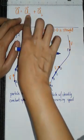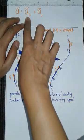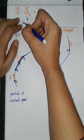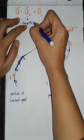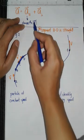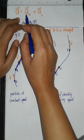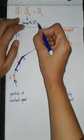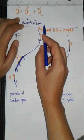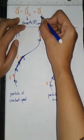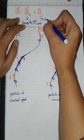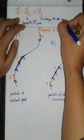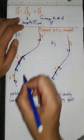So this changes the magnitude of the velocity of a particle. This is another way of saying A parallel changes the speed of the particle. Whereas, A perpendicular, this is responsible in changing the direction of the instantaneous velocity.